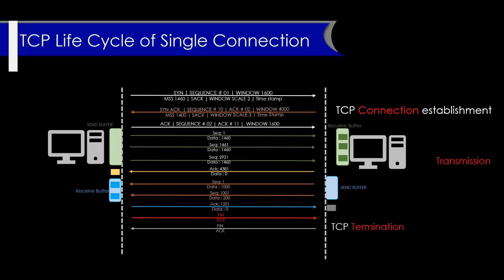Then we have TCP termination: FIN, FINACK, and the TIME_WAIT state. Whenever a connection is terminated, both ends enter a TIME_WAIT state to ensure that any remaining packets on the network are processed before the connection is closed. TCP termination using a FIN flag is an orderly release, so there is no chance of losing any data. That's why whenever a FIN has been sent, it waits in TIME_WAIT to ensure data has already been transmitted before closing the connection.